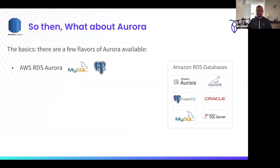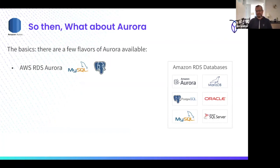So let's talk about Aurora. Aurora is ultimately a version of Amazon RDS — Relational Database Service, RDS.